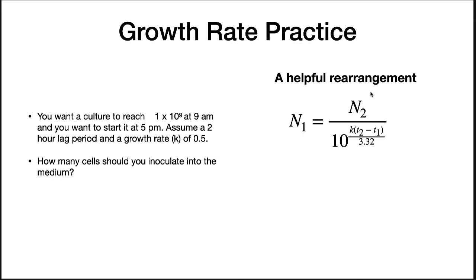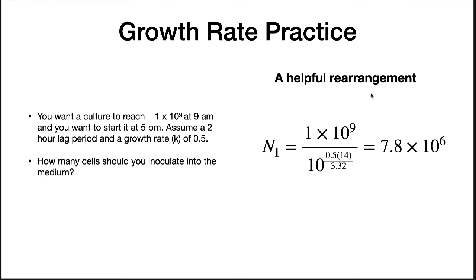Let's do another practice problem. You want a culture to reach 1×10^9 cells at 9 a.m., and you want to inoculate at 5 p.m. the previous day. Assume a 2-hour lag period and a growth rate of 0.5 generations per hour. How many cells should you inoculate into the medium? From 5 p.m. to 9 a.m. is 16 hours; with a 2-hour lag period, T2 minus T1 equals 14 hours. Plugging the numbers into the rearranged growth equation gives an answer of 7.8×10^6, or about 8 million cells.